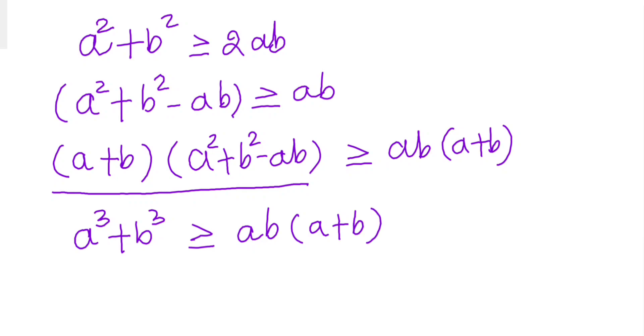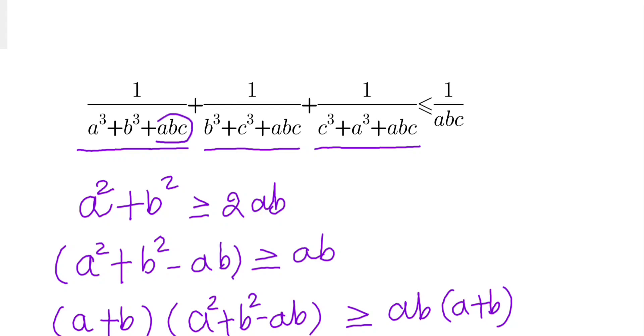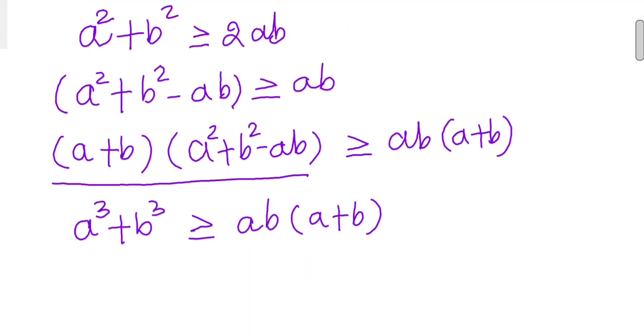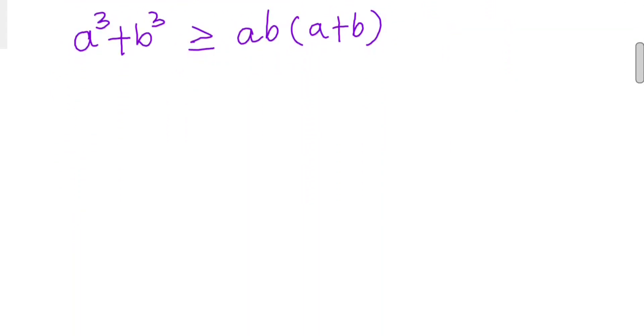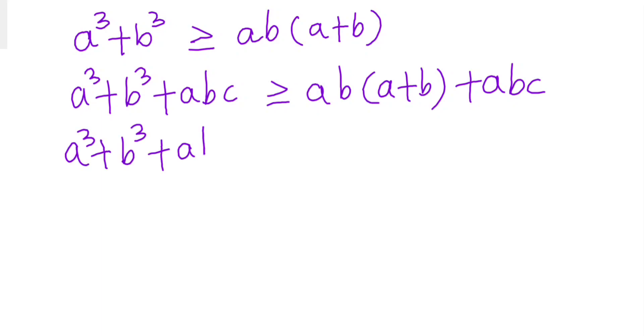Now let's add abc as we have here. So I'll add abc and this gives me a³ + b³ + abc ≥ ab(a + b + c). This is the important part here.